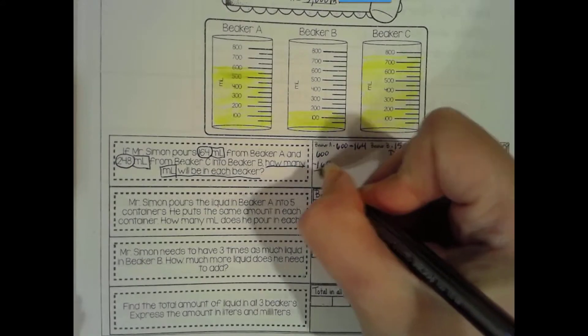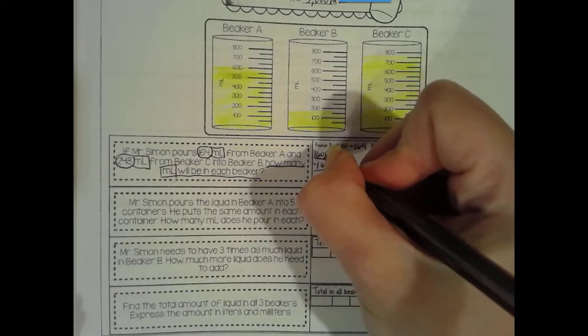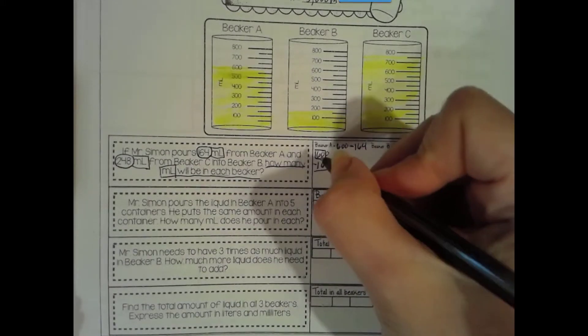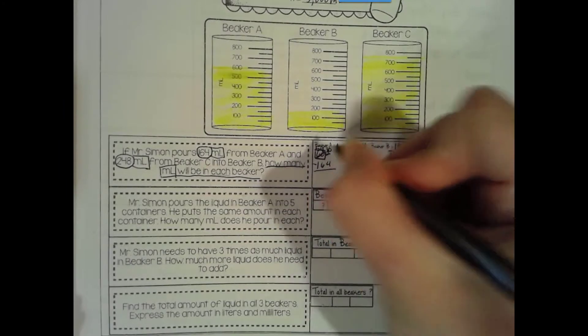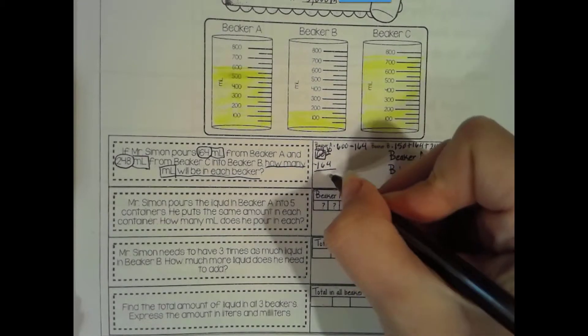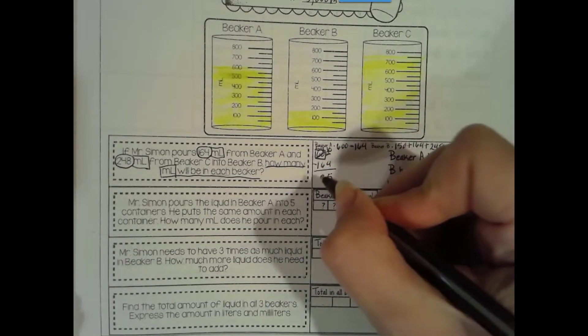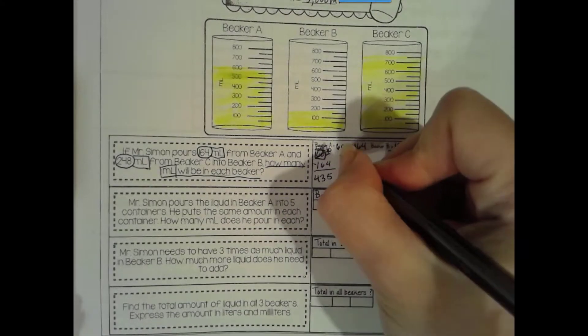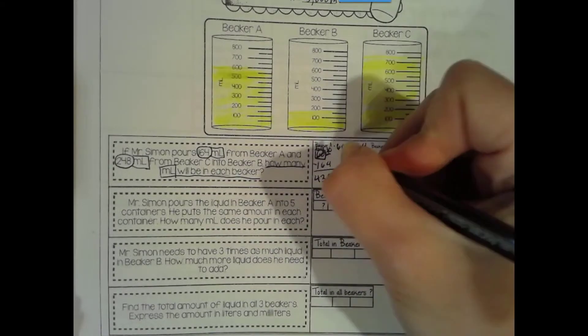1 liter is equal to 1,000 milliliters. Milli has to do with 1,000. So to convert it, we're going to multiply 3 times 1,000. 3 liters, we're cutting it up into milliliters. So there's 1,000 in there. So 3 times 1,000 is 3,000. 3,000 milliliters plus 2,000 milliliters is 5,000 milliliters. Remember, we have a lowercase m, then a capital L for milliliters.